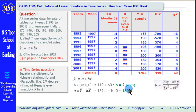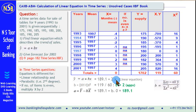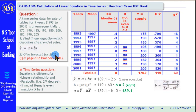Now we can put these values into our formula. So the linear equation is: Yc = 189.1 + 2x. This is our linear equation which describes the trend of the sale, and this is the answer to our first question.